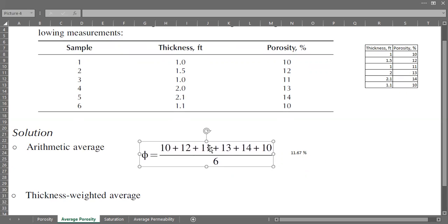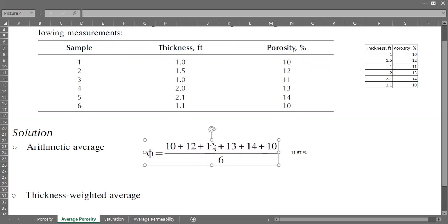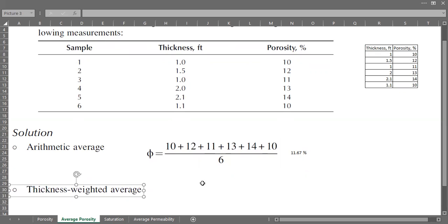When you are in a hurry you can calculate like this—it's not a bad estimate—but if you have time to do proper analysis, you must do thickness-weighted average. The formula is quite simple.